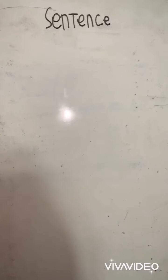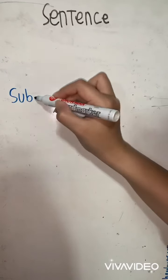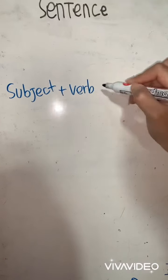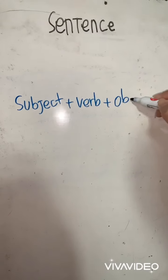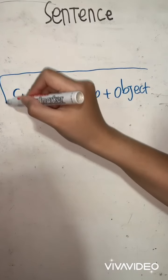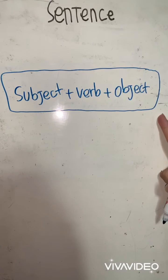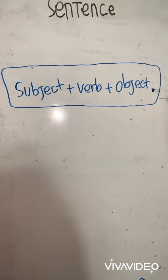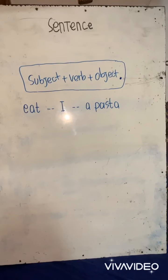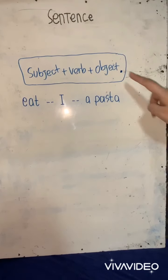How to make a sentence? If you want to make a sentence, you need a subject, verb, and object. This is the formula for how to make a sentence. But don't forget to put a full stop at the end of the sentence. Always remember to begin a sentence with a capital letter and end it with a full stop.